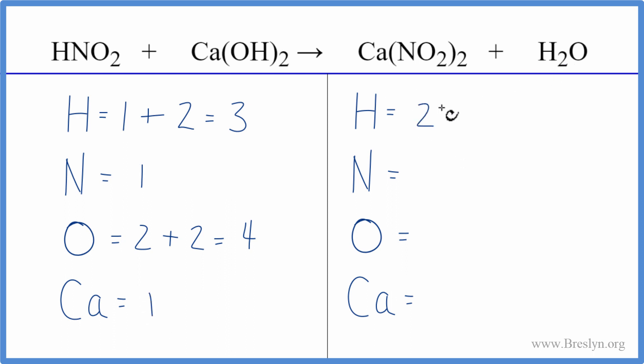On the product side of the equation, we have two hydrogens, one times the two, two nitrogens, and then the oxygens, two times two is four, plus don't forget the oxygen here on the water. That gives us five oxygen atoms and we have one calcium.